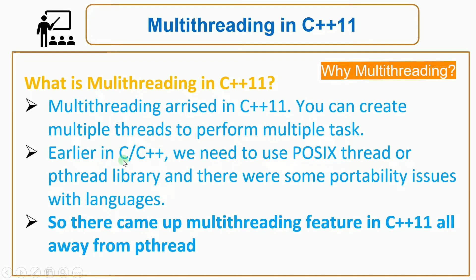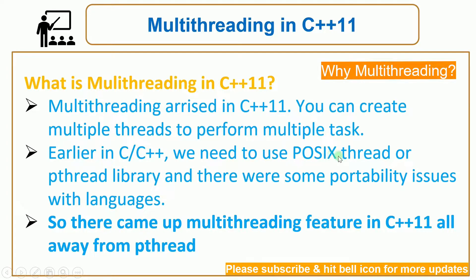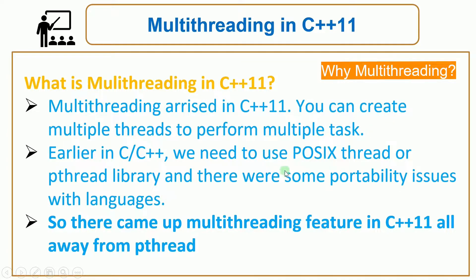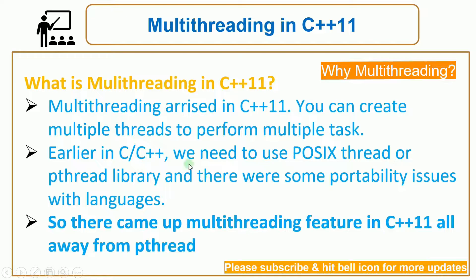Earlier in C and C++ we needed to use the POSIX thread library, which is also called the p-thread library. This was the way to create threads in C and C++, but there were portability issues with using POSIX threads. So in C++11, the necessity for a native multi-threading feature arose and was fulfilled.